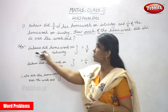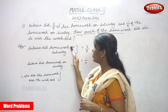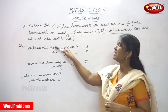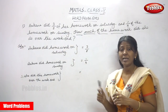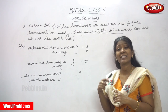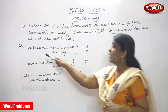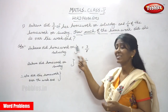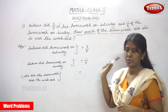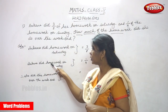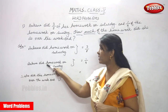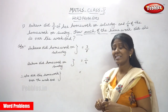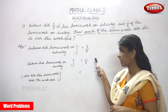So the solution: Ankana did homework on Saturday — she has completed it, that is the three-eighths fraction. Ankana did homework on Sunday — she completed one-fourth fraction on Sunday.